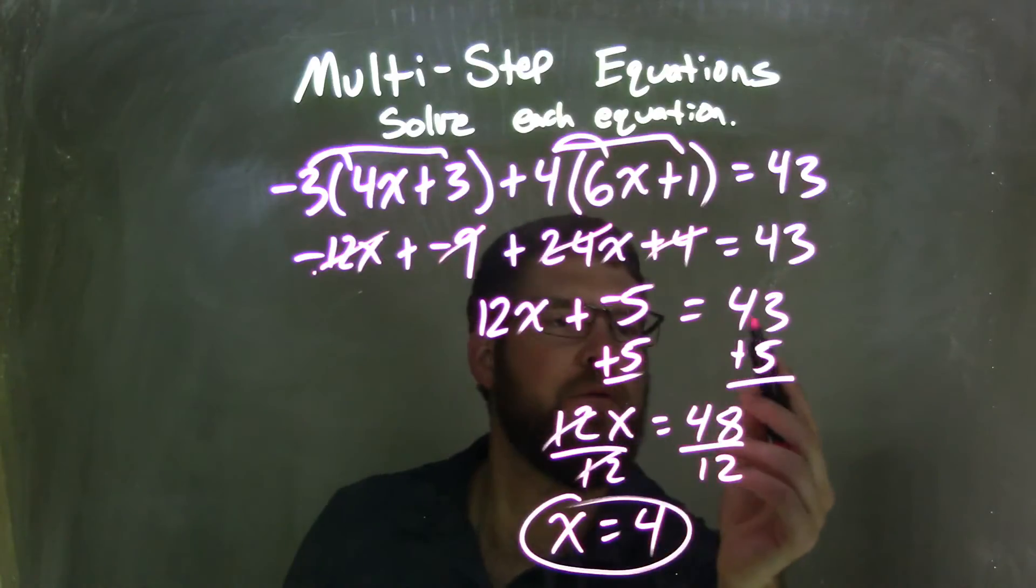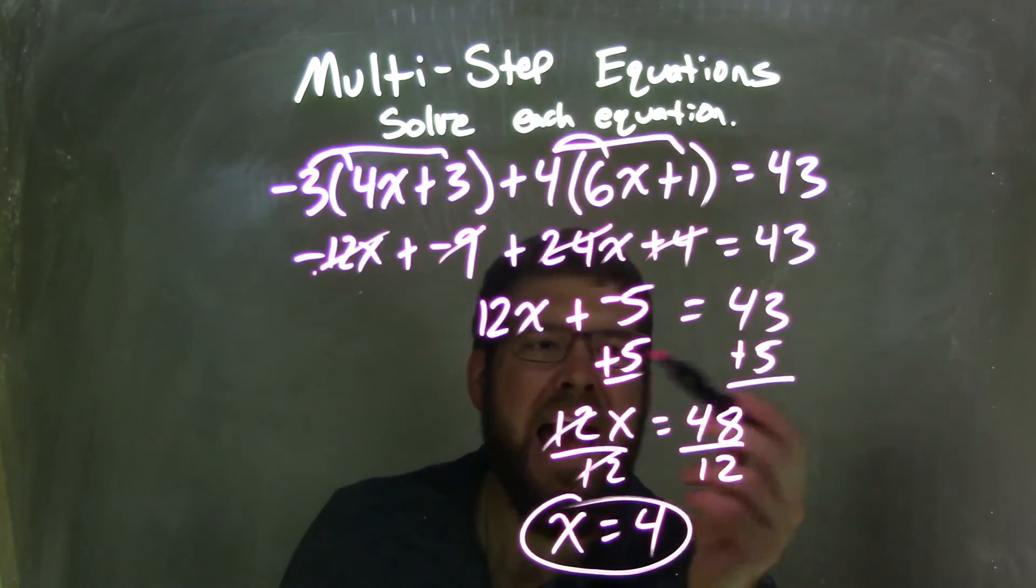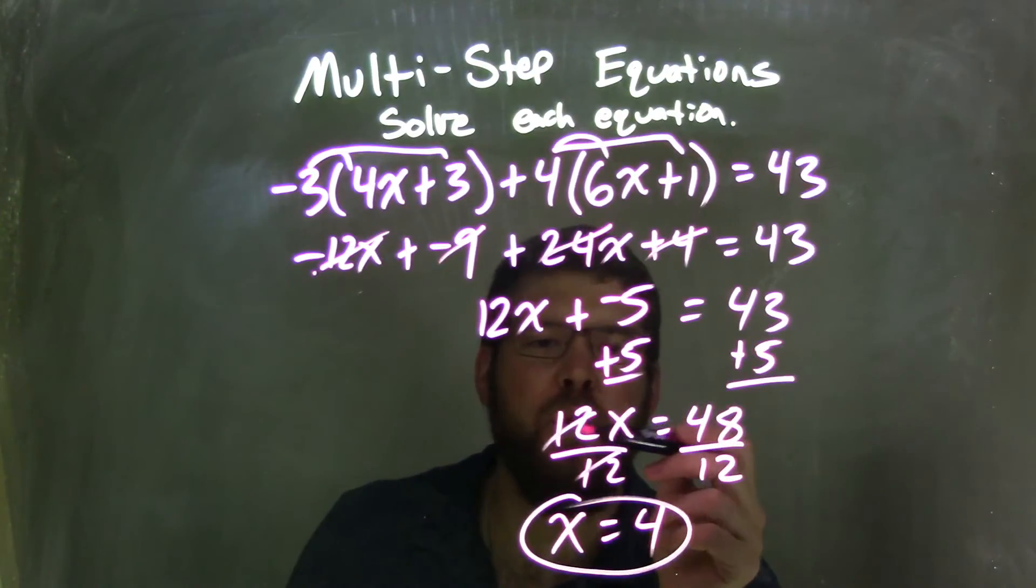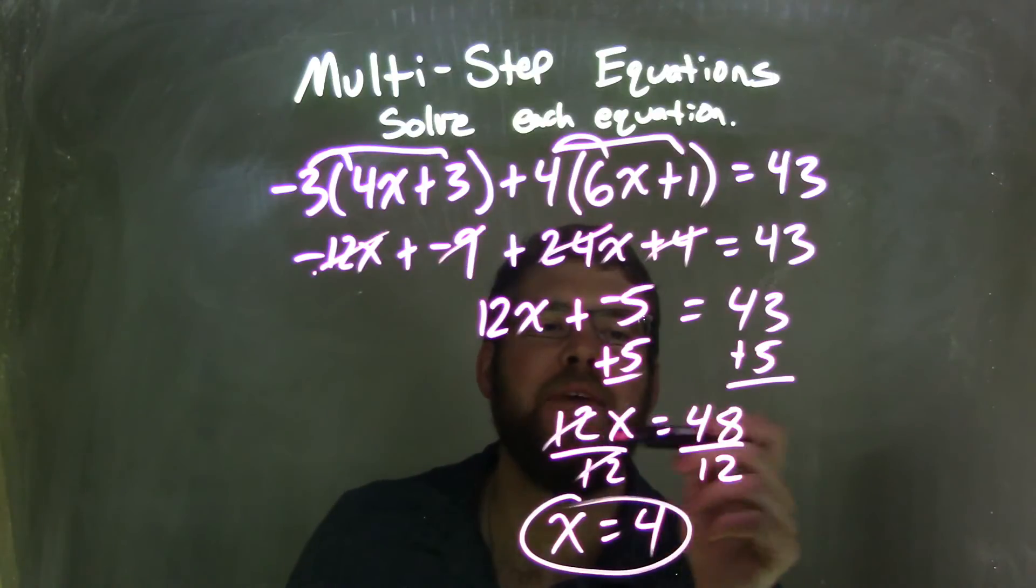So I have 12x plus negative 5 equals 43. I need to get rid of that negative 5 and bring it over to the right, so I'm going to add 5 to both sides. Leaving me with 12x on the left equals 43 plus 5, which is 48.